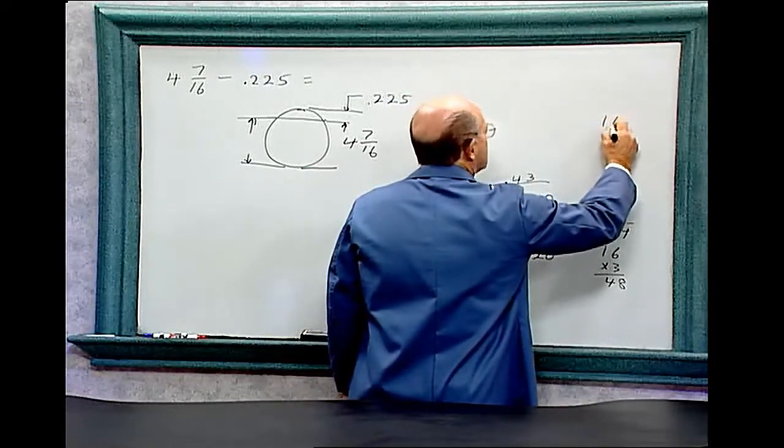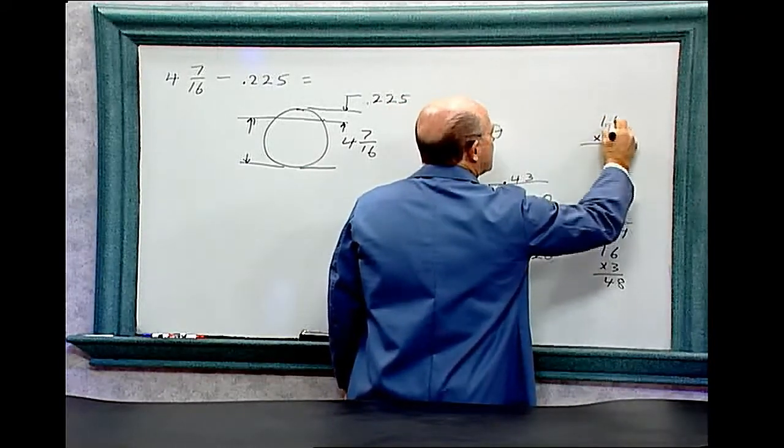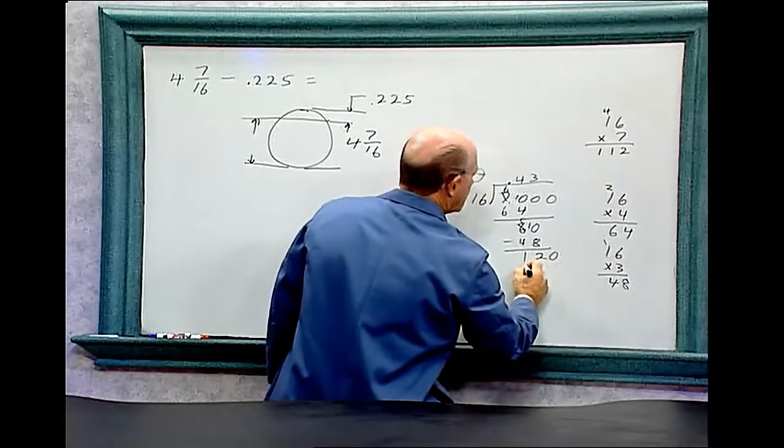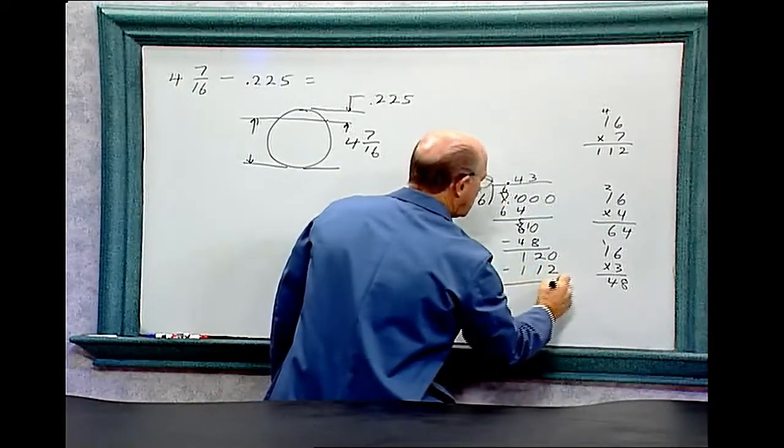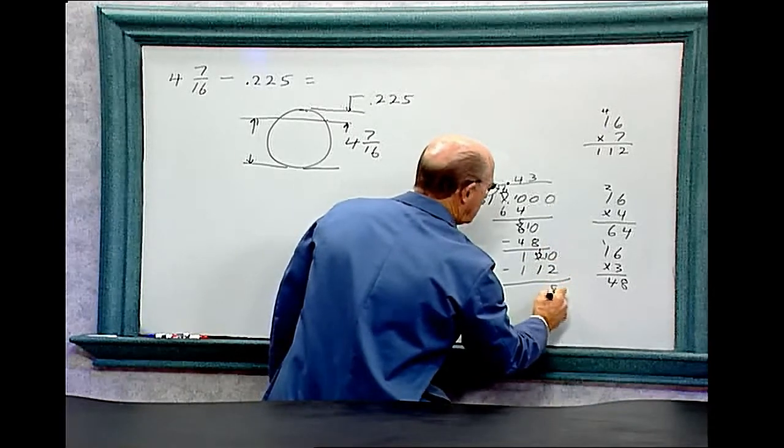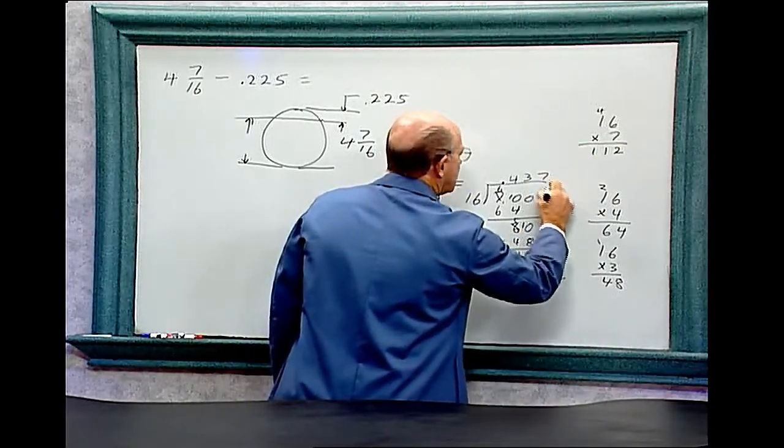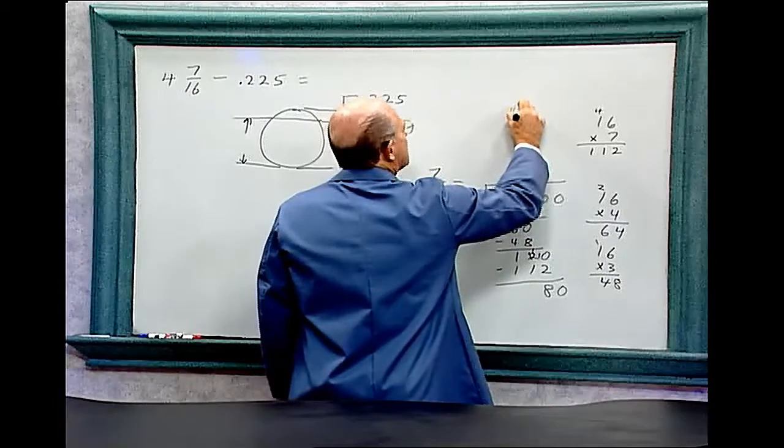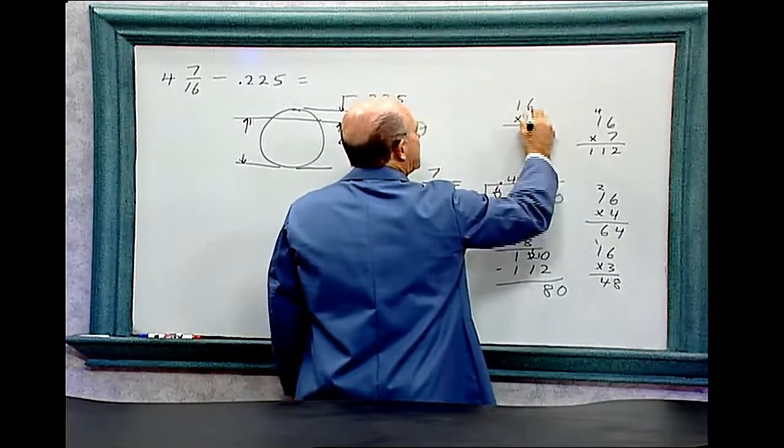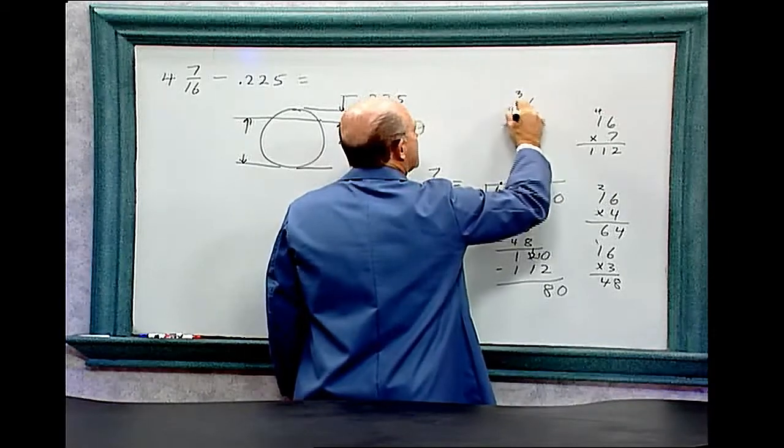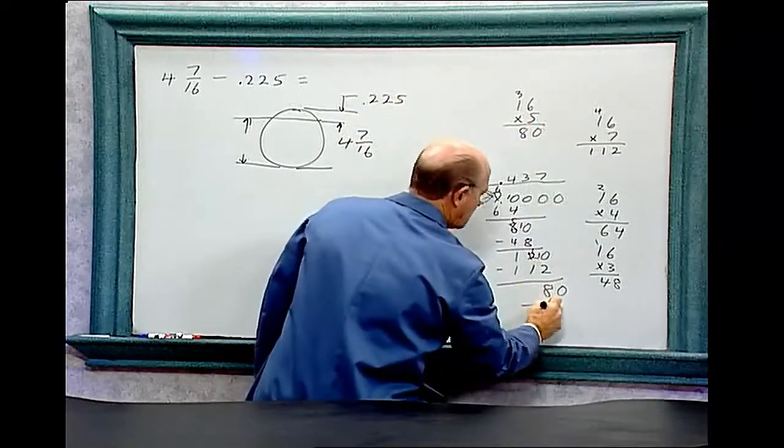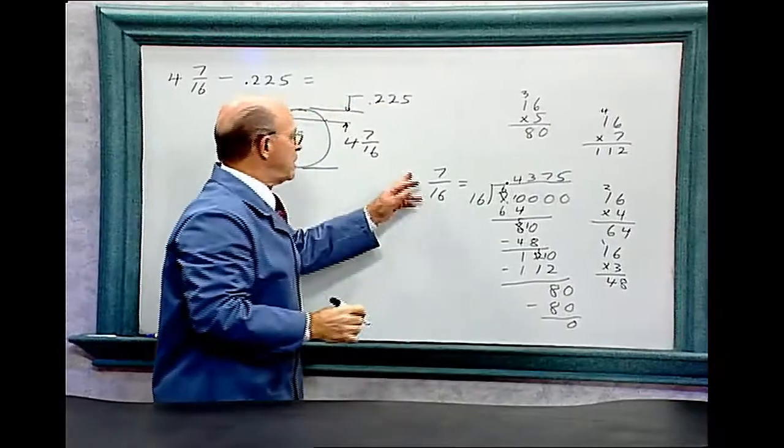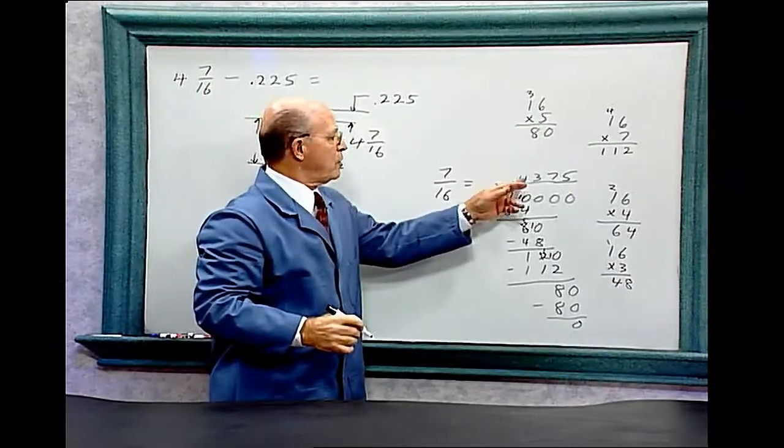How many times will 16 go into 120? So it'd be 16 times 7 is 112. Deduct that. So it'll be 8. We need another 0. Bring that down. How many times does 16 go into 80? 16 times 5 equals 80. 5 plus 80 minus 80 equals 0. So 7/16 equals 0.4375.